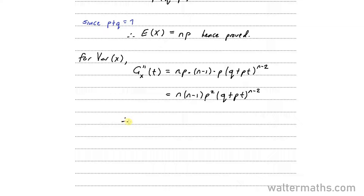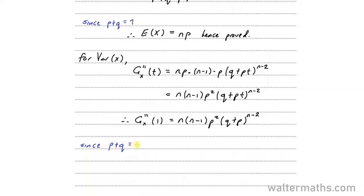For G double dash of 1, substituting 1 for T, that will be N times N minus 1 times P squared times Q plus P to the power of N minus 2. Since P plus Q equals 1, and 1 raised to the power of N minus 2 is just 1, so G double dash of 1 equals N times N minus 1 times P squared.